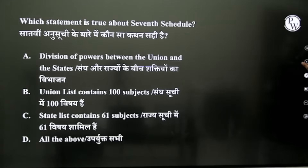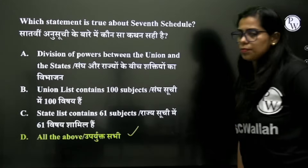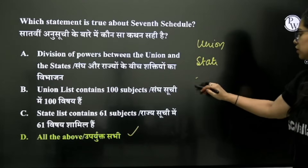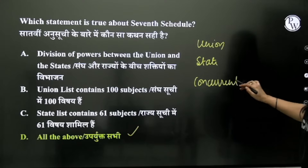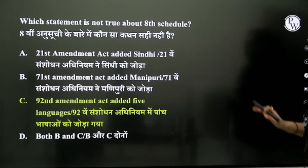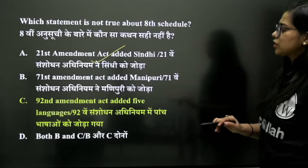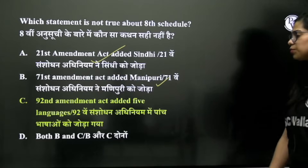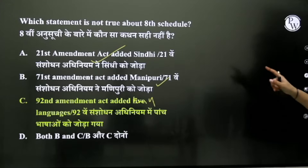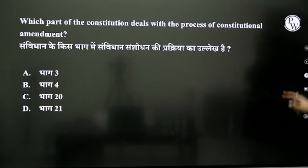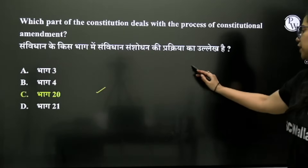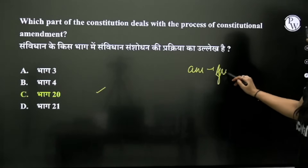Which statement is true about the 7th Schedule? It includes residual power and you get all three lists — Union List, State List, and Concurrent List. Regarding the 8th Schedule — Sindhi language was added, Manipuri language was added by the 71st Amendment, and four languages were added by one amendment including Bodo language. Which part of the Constitution deals with the process of constitutional amendment? That is Part 20, and the amendment process was borrowed from South Africa.